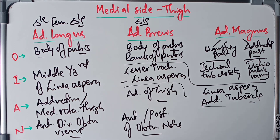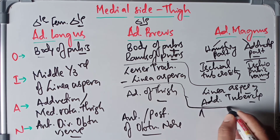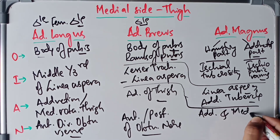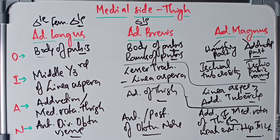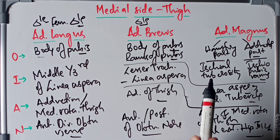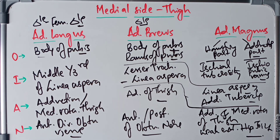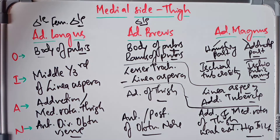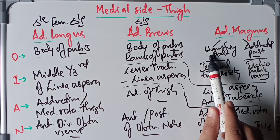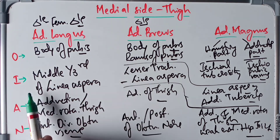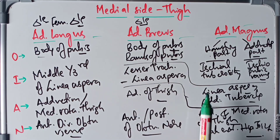The actions of adductor magnus include adduction and medial rotation of the thigh, as well as weak extension of the hip joint. For nerve supply: the adductor part is supplied by the posterior division of the obturator nerve, and the hamstring part is supplied by the tibial part of the sciatic nerve.